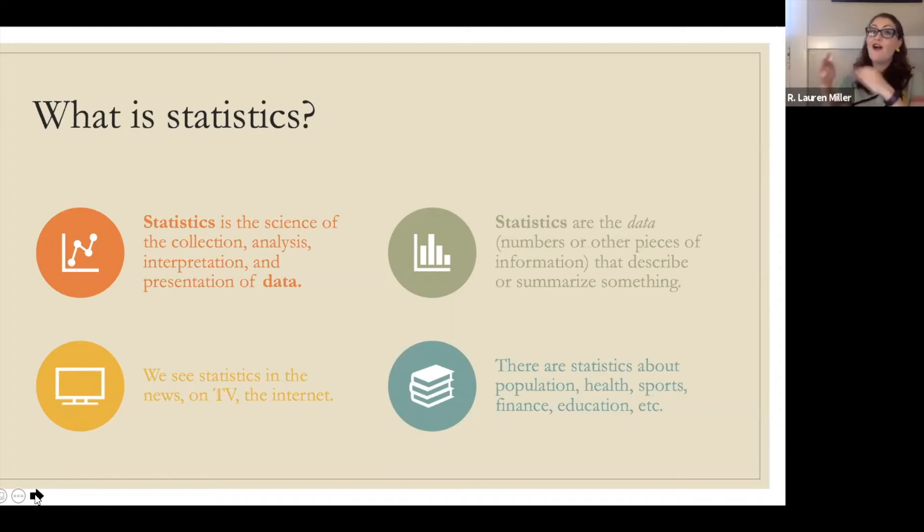Statistics specifically are also the data that we collect. Those could be numbers or other information that is categorical. We're going to talk about that later. And we can take that data and summarize something. For example, the average American is five foot six. The world's population is 48.6% women.